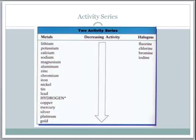The first thing we want to talk about is the activity series. An activity series is basically a listing of metals — and sometimes non-metals — that will identify which metals will replace which in a single replacement reaction.